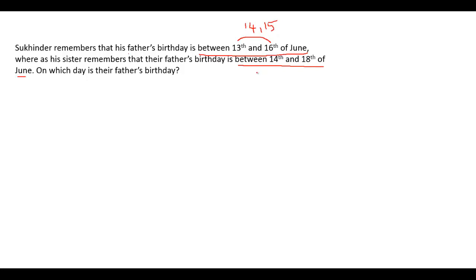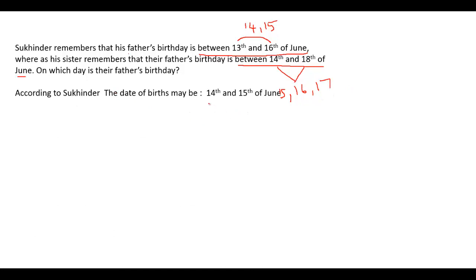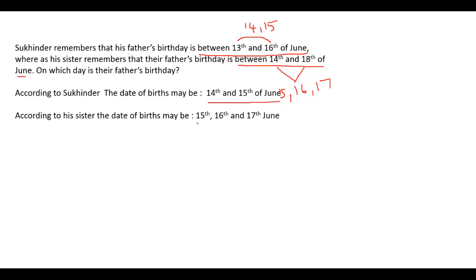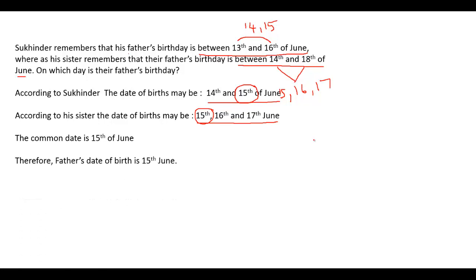His sister says it is between 14th and 18th — not on 14th or 18th — so it may be on 15th, 16th, or 17th. According to Sukhvinder, the date of birth may be 14th or 15th of June. According to his sister, it is 15th, 16th, or 17th of June. In both cases, 15th of June is the common date, and therefore the father's date of birth is 15th June.